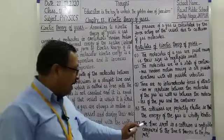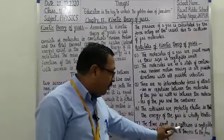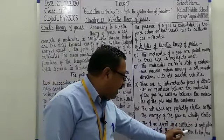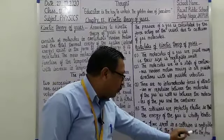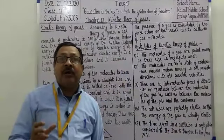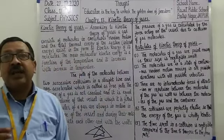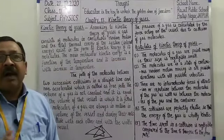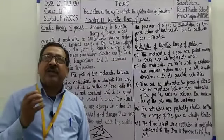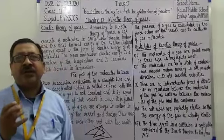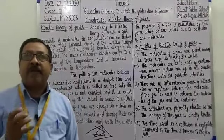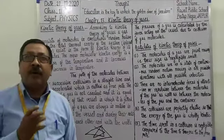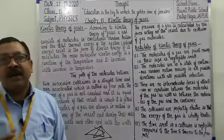Number five: the time spent in a collision is negligible compared to the time traversed along the free path. یعنی جو molecule free path پر move کرتا ہے، اس کے comparison میں جو collision کا time ہے وہ بہت ہی minor ہوتا ہے۔ Collision بہت ہی چھوٹے وقت میں ہو جاتی ہے، جبکہ molecules کا free path پر traveling کا time collision کے time کے comparison میں کافی زیادہ ہوتا ہے۔